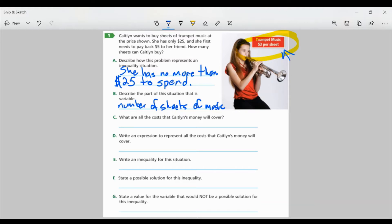Part C. What are all the costs that Caitlin's money will cover? Well, I know she first needs to pay back $5 to her friend, and then she's going to use the rest to buy sheet music. So that's what it's going to cover. So paying back $5 to her friend and sheet music.